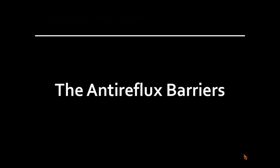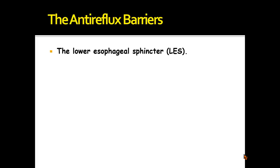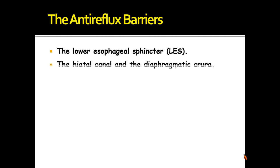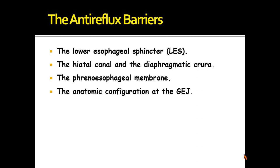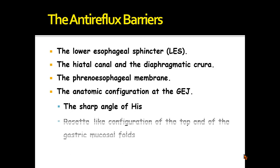Now, what about the anti-reflux barriers? These include: the lower esophageal sphincter; the hiatal canal and the diaphragmatic crura; the phreno-esophageal membrane; and the anatomic configuration of the gastroesophageal junction — such as the sharp angle of His and the rosette-like configuration of the top end of the gastric mucosal folds.